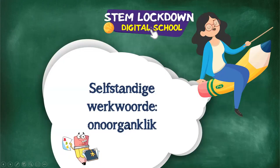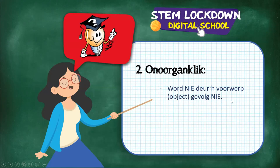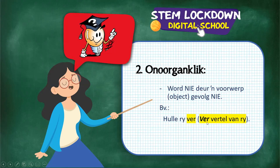Selfstandige werkwoorde onoorganklik — the second type — means there is no object following the verb. For example: 'hulle ry ver.' 'Ry' is the verb, and 'ver' tells me more about how they are riding — it's telling me how they are driving. So onoorganklik: no object behind the verb, not at all the same as oorganklik.